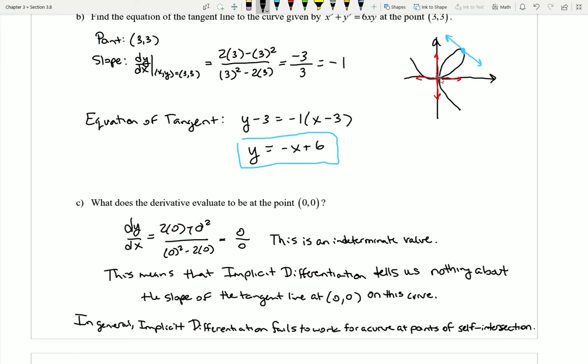That is, points where a curve crosses over itself. And so I can see that happening here at (0,0). And so it's actually no surprise that the derivative here is unable to give me a meaningful value.